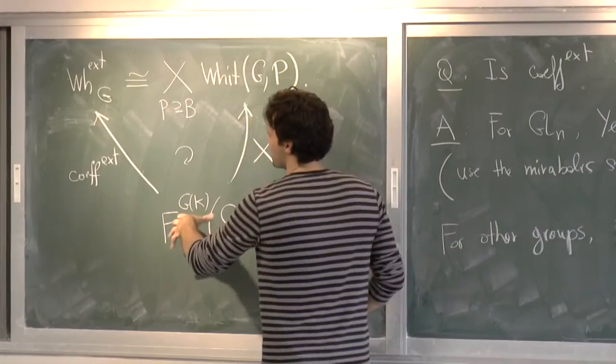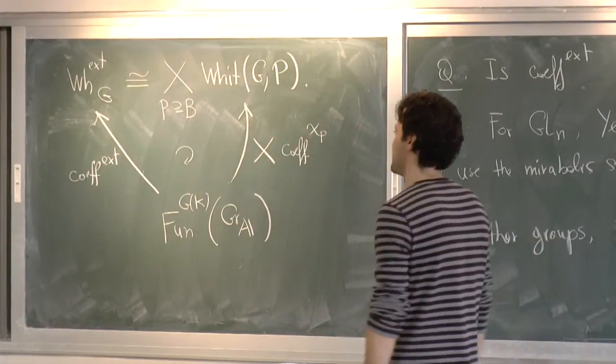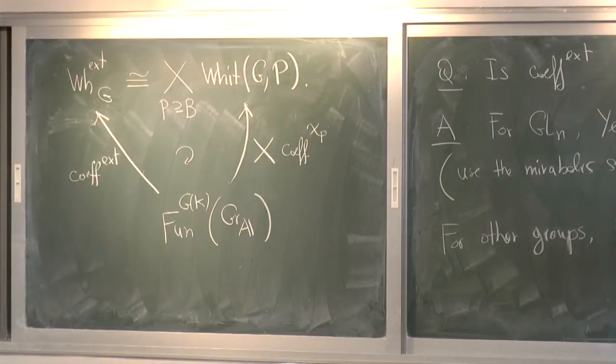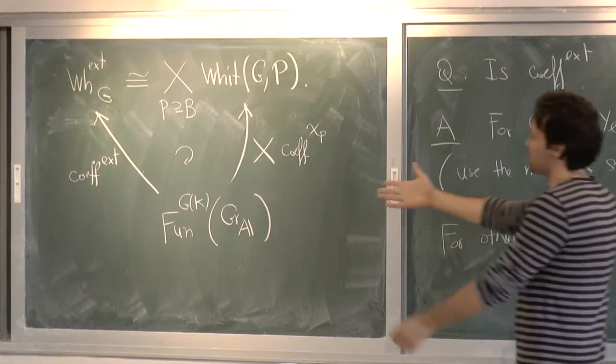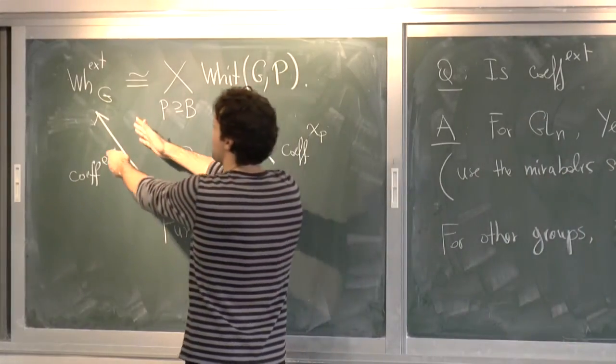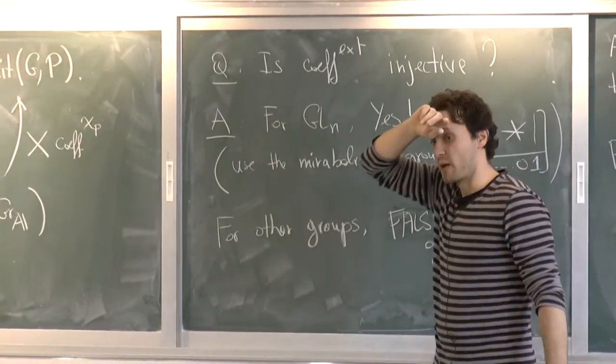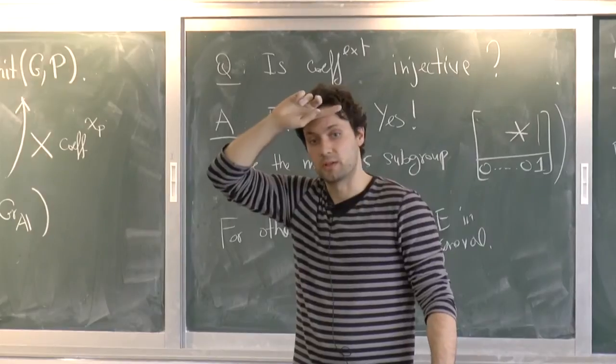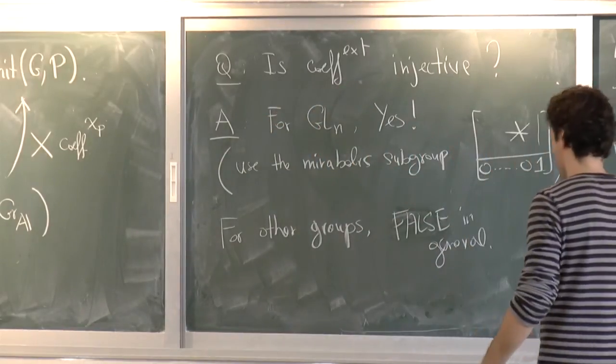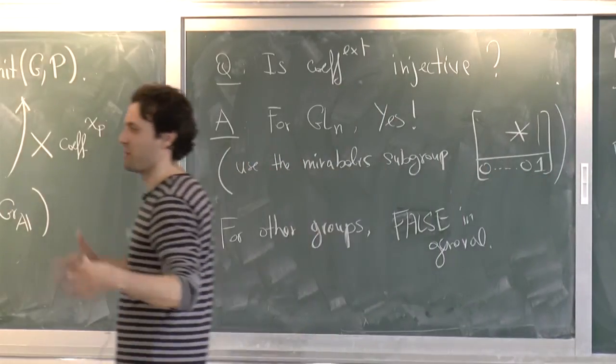So that's just I wrote some hint in the notes. That's the situation for GLN. But then for other groups, and I'm no expert here on this. But for other groups, this injectivity is probably false. Perhaps false. In general, false in general. All right, so that's the status.